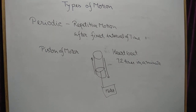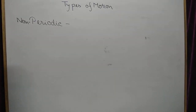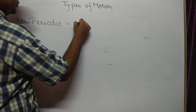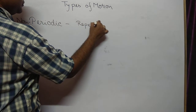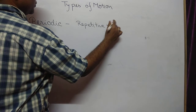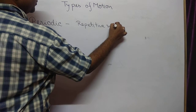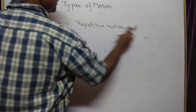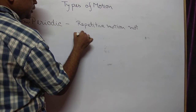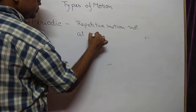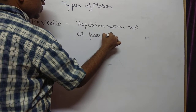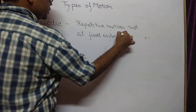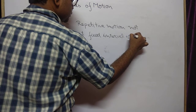After periodic motion, we have its opposite: non-periodic motion. Non-periodic motion is also repetitive, but it does not repeat at a regular or fixed interval of time. This type of motion is known as non-periodic motion.